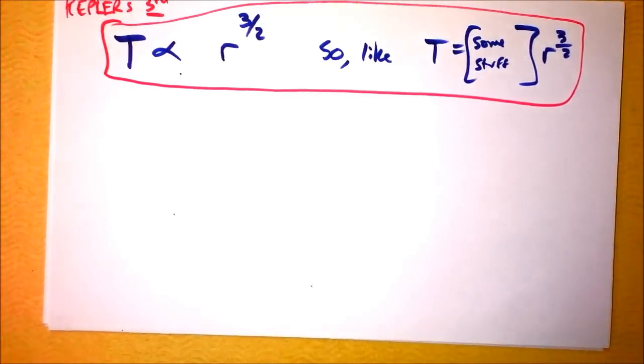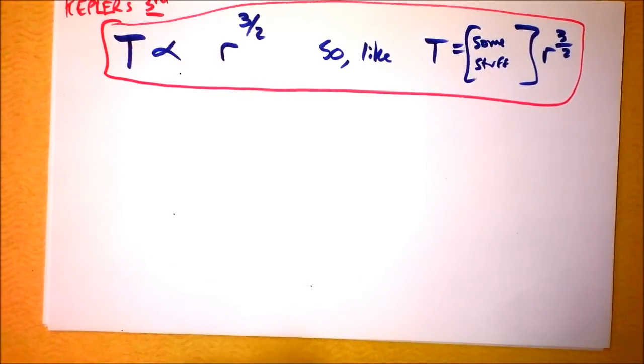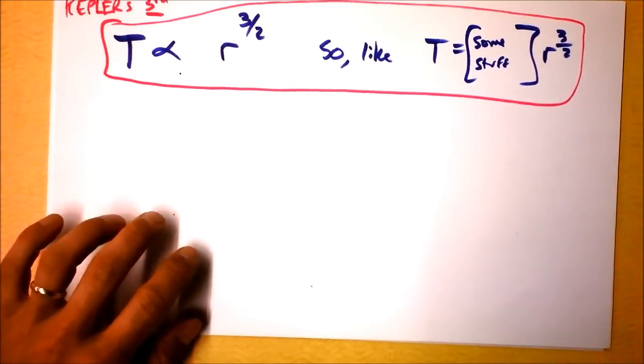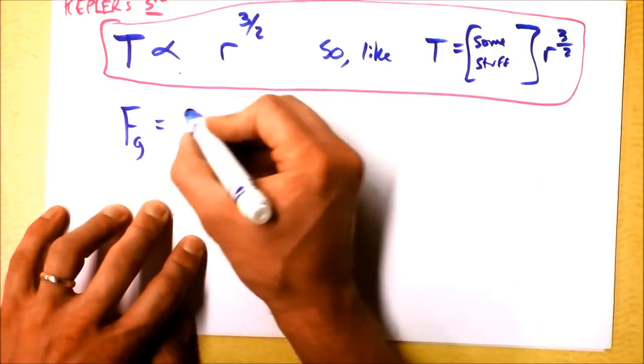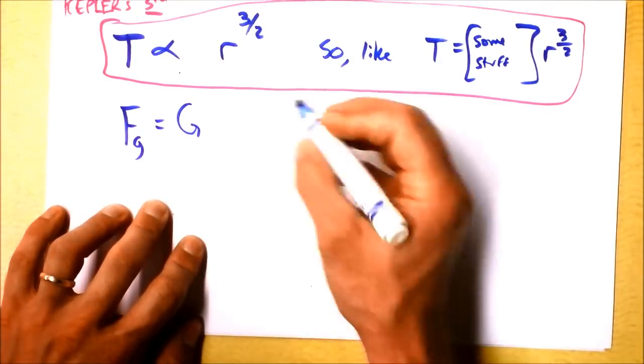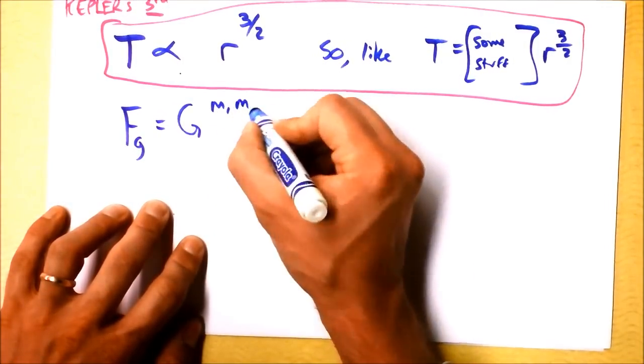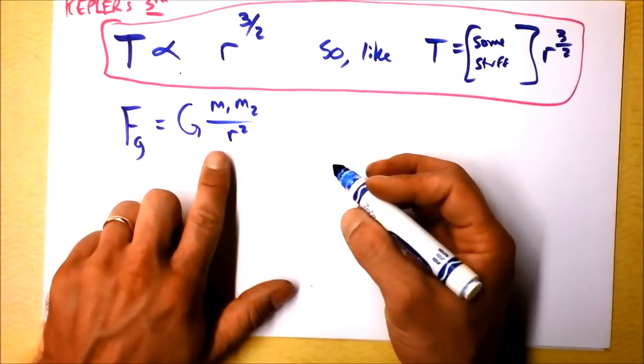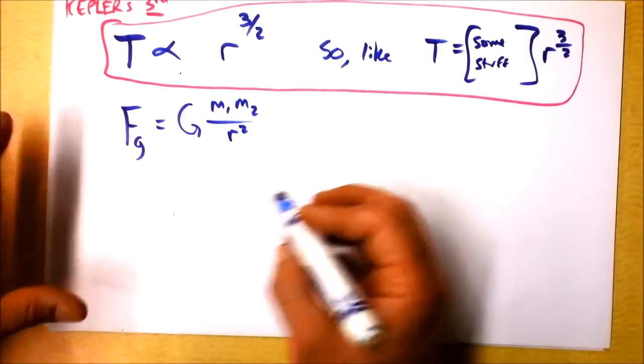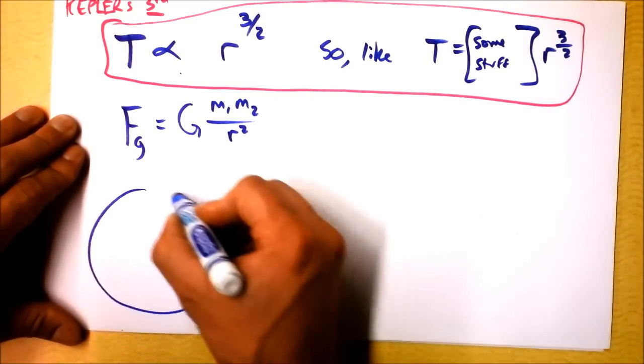So Newton, in order to get some street cred with his buddies, the old British men, and the Academy of Sciences throughout Europe, he said, check this out, guys. Here's the force of gravity. The force of gravity is, well, I'm proposing, this is Newton, I'm proposing the force of gravity is G times m1 times m2 over r squared. And I'm saying that the force of gravity is providing a centripetal force on stuff that's going around in a circle.